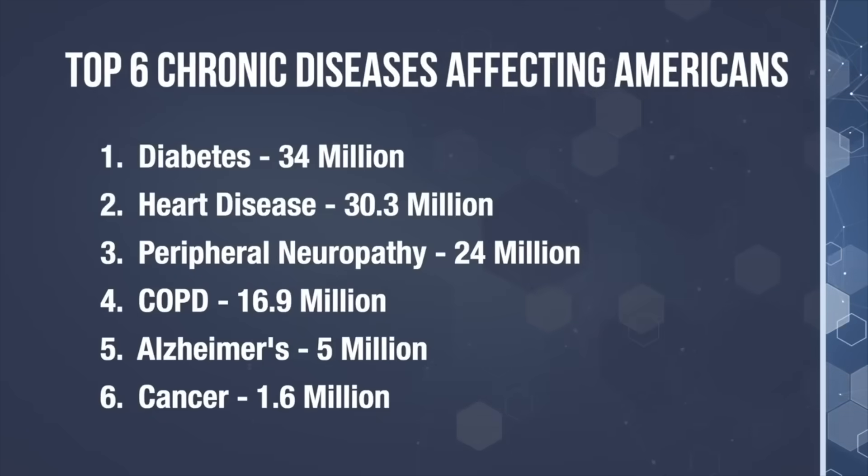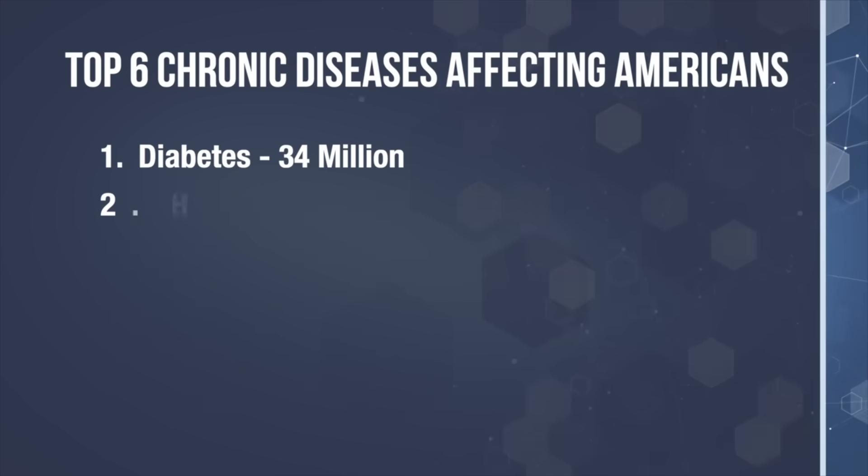So let's take a look at where it lands. The number one disease that affects the most Americans is diabetes affecting 34 million Americans. Second is heart disease affecting 30.3 million Americans. Number three on the list is peripheral neuropathy affecting 24 million Americans. After that we have COPD affecting 16.9 million Americans, Alzheimer's affecting 5 million Americans, and cancer affecting 1.6 million people. I find that to be absolutely mind-blowing. The fact that there are 20 times more peripheral neuropathy sufferers than people who are afflicted with cancer. That is just astounding.